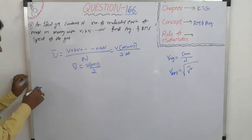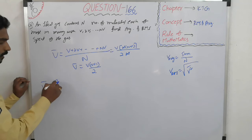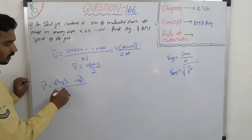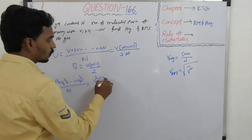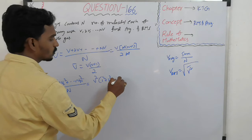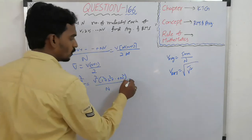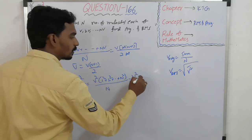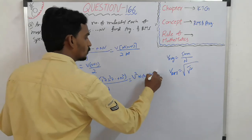Now similarly, to find RMS velocity, first to find average value of square of the speeds. That is, V1 square plus V2 square plus so on, Vn square by n. That is, V square if you take common, 1 square plus 2 square plus so on, n square, whole divided by n. And if you substitute the sum of square of natural numbers, it will become n into n plus 1 into 2n plus 1, whole divided by 6n.